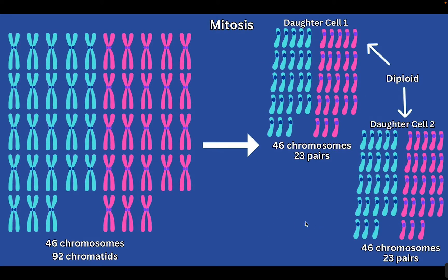In mitosis, after interphase, we enter mitosis and at the end get two daughter cells. These daughter cells still have 46 chromosomes with 23 pairs — 23 from dad and 23 from mom. This is why it is called diploid: we still have two sets of the DNA. That's what the 'di' is for — having two. Both daughter cells look the same as each other and the same as the starting chromosomes. We have identical diploid cells.